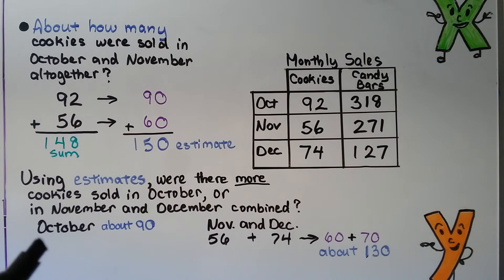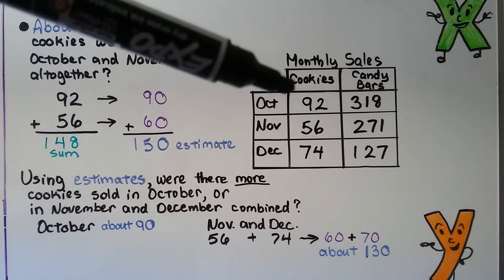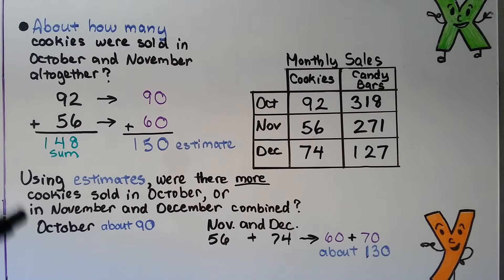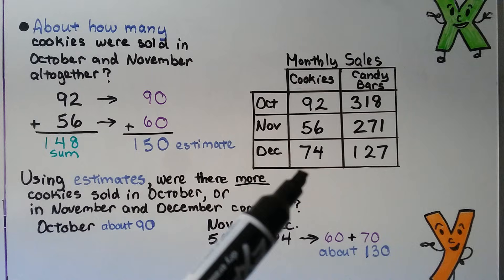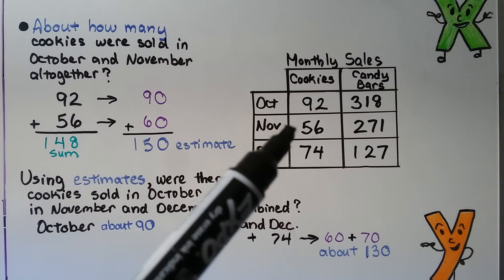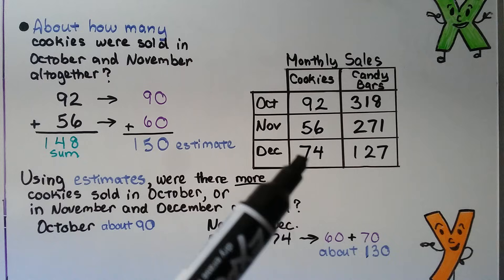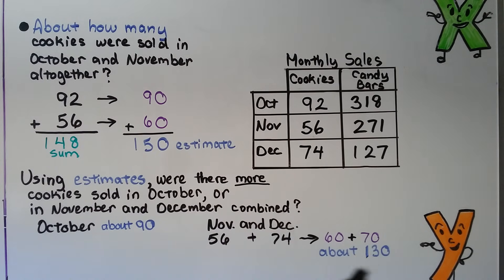Using estimates, were there more cookies sold in October or in November and December combined? So were there more cookies sold in October? That's about 90 cookies. Or November and December combined? So that means we need to combine these. So we can round this 56 to about a 60 and this 74 to about a 70. And that would be about 130. So that's more than October. So November and December combined, there were more cookies sold.